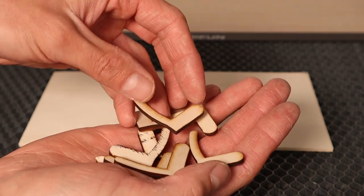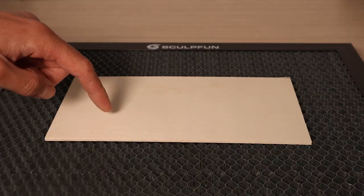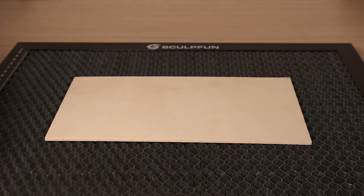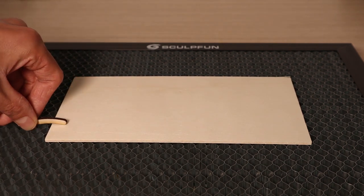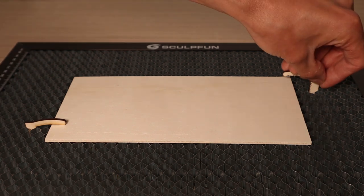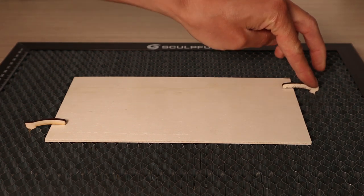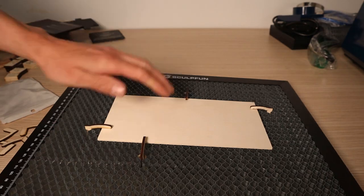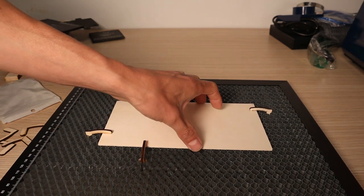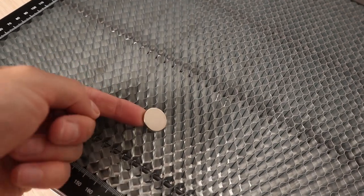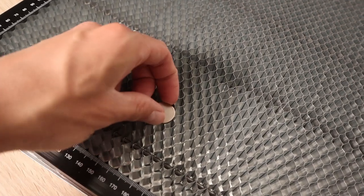I also designed these cool holding pins for this honeycomb which you can use to hold the wood down when engraving. I will leave a download link in the video description. You can cut them out of three millimeters thick wood. The honeycomb is made from steel and you can also use magnets to hold your workpiece.